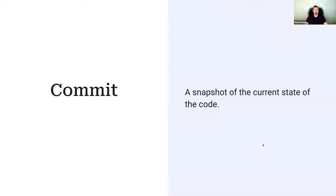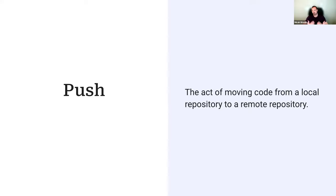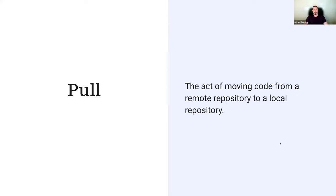When you commit, you select the files or lines of code you want, leave a commit message describing what you changed and why, and that gets stored into the repository. Pushing is taking the changes you've made locally and sending them up to your remote repository on GitHub, where they can be shared with other developers. Pulling is grabbing changes from the remote repository and pulling them down to your local machine.